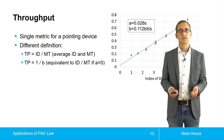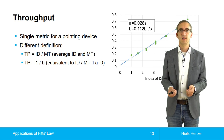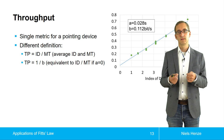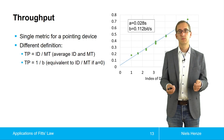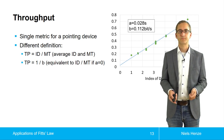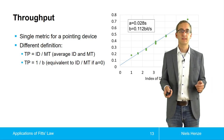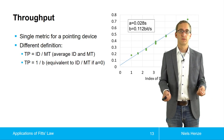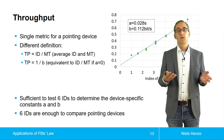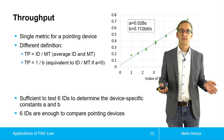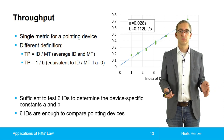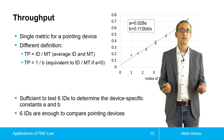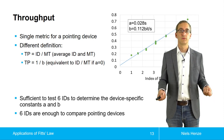That massively reduces the number of trials we have to conduct. It is sufficient to test around six index of difficulties to determine the device-specific constants, and that's all we need to learn about the throughput. So six index of difficulties are enough to compare different input devices.